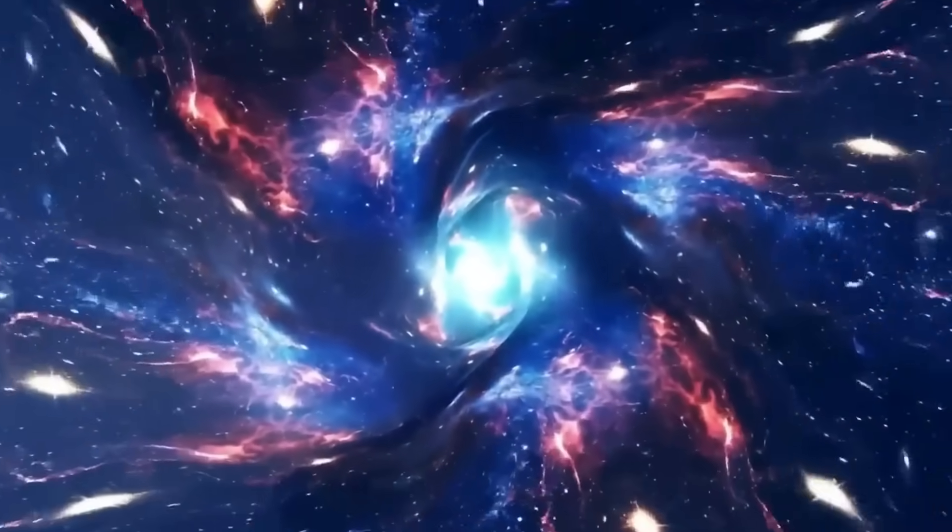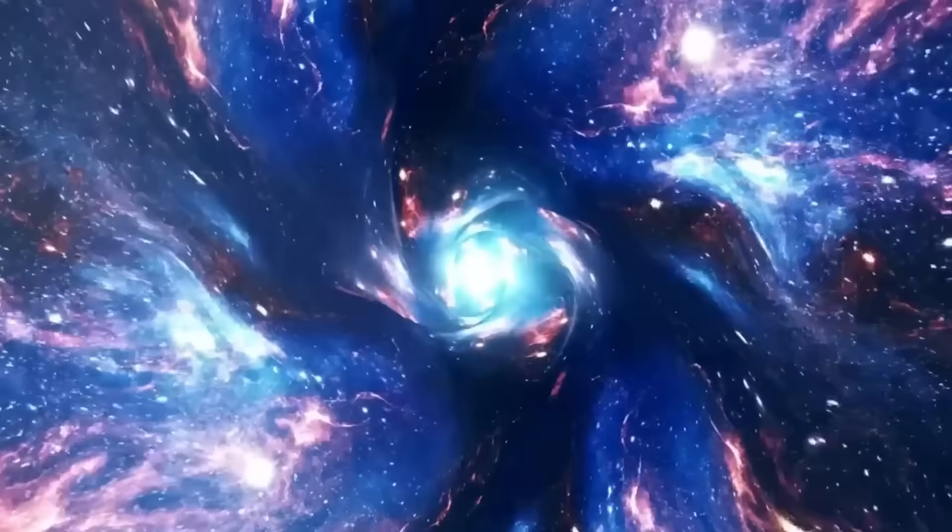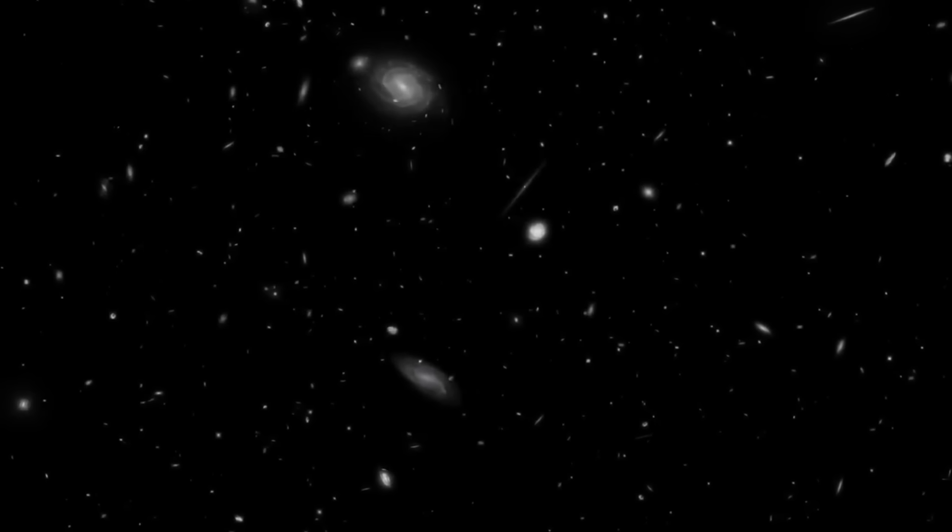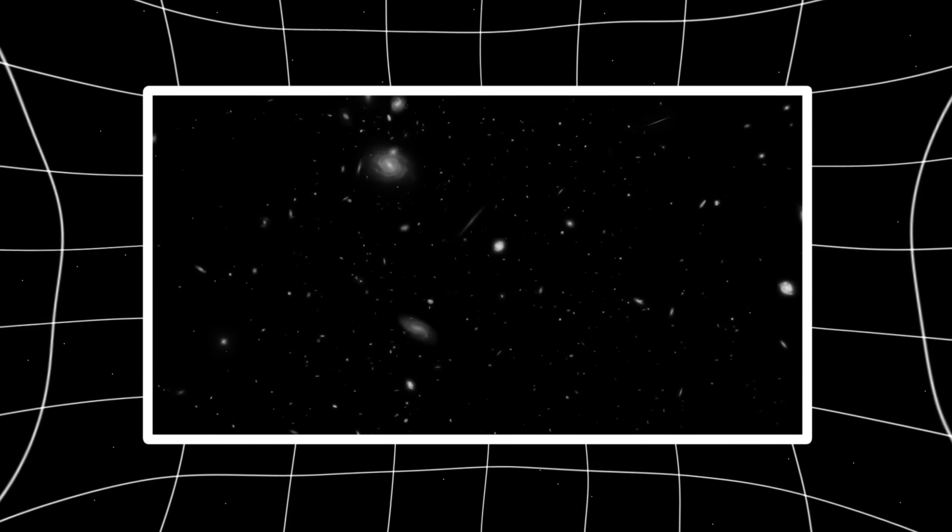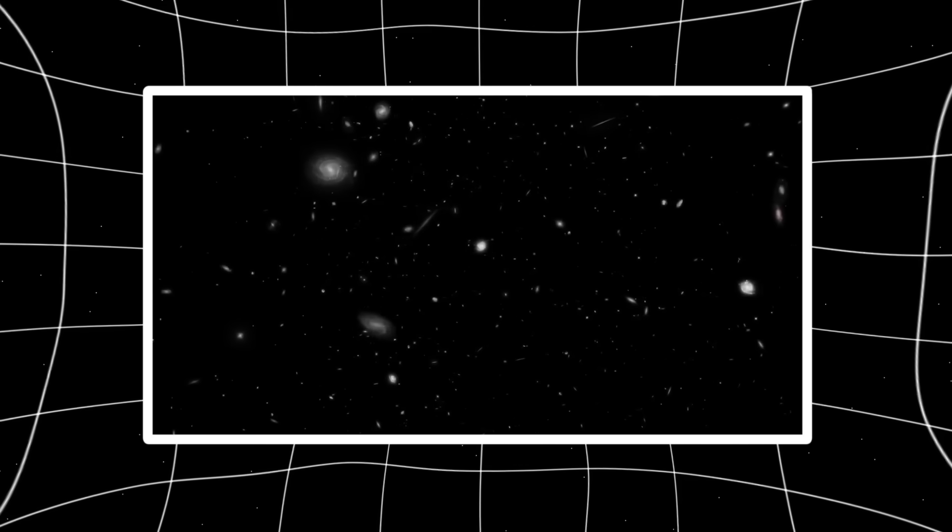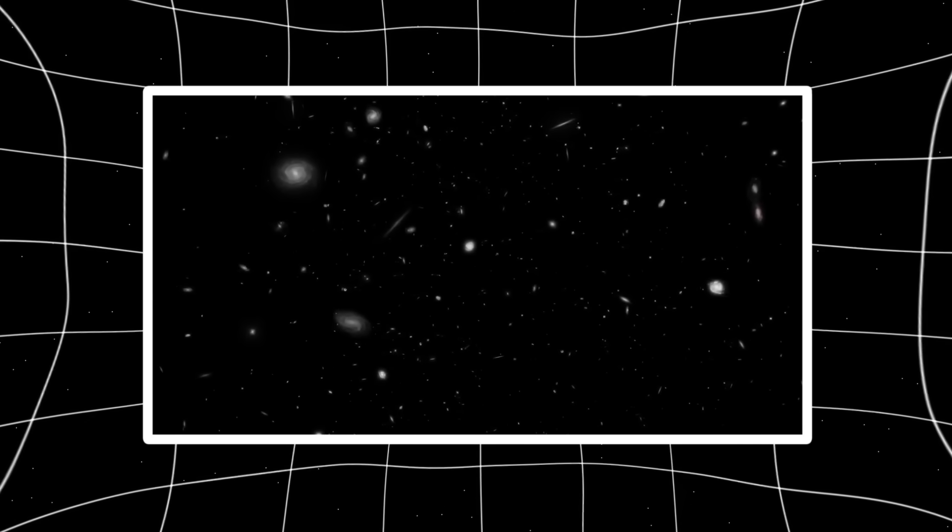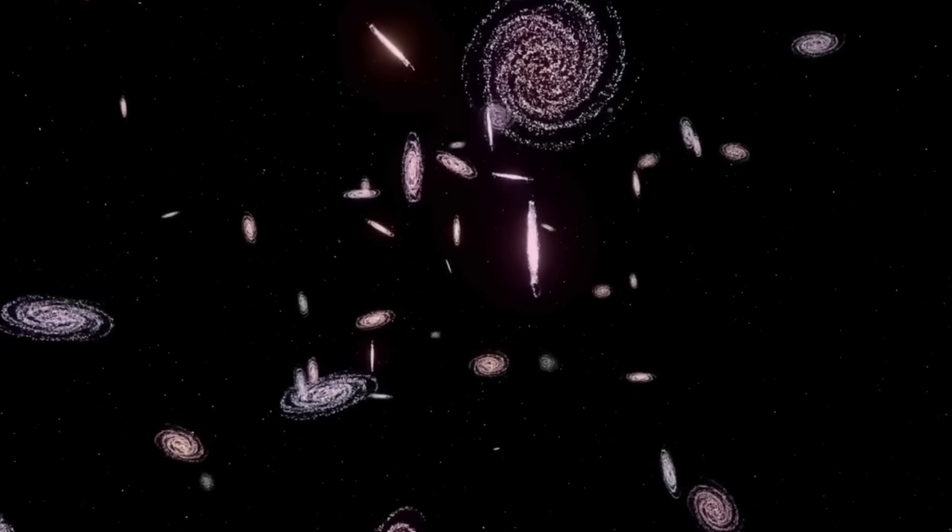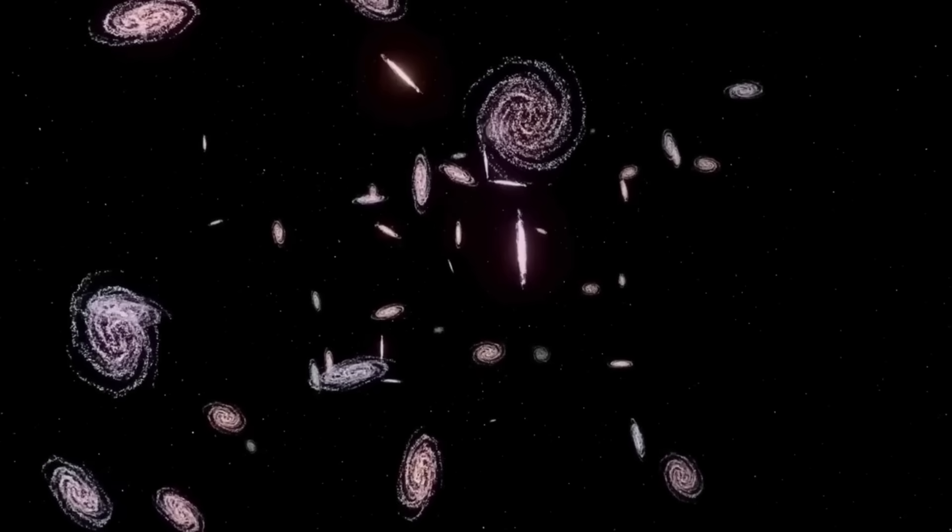The nitrogen anomaly, the ghost signatures, the mirror symmetries, they all hint at a preceding intelligence, something that understood star formation, chemical evolution, and spatial structure long before we ever asked the questions. And if these seeds were planted, then who or what planted them? And more importantly, are they watching the garden grow?